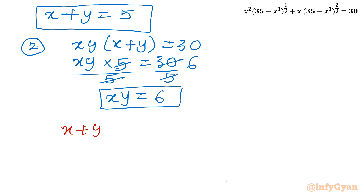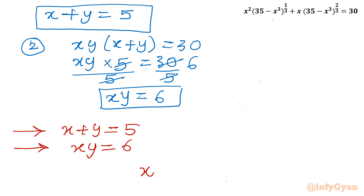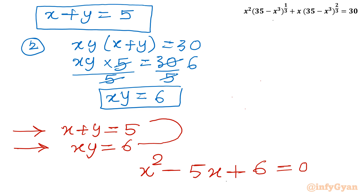We can now find our answer easily. Consider x plus y equals 5 as the sum of roots and x y equals 6 as the product of roots. So we can frame one equation in the variable x itself: x squared minus 5x plus 6 equals 0. Alternatively, setting y equal to 6 over x and substituting gives the same equation.